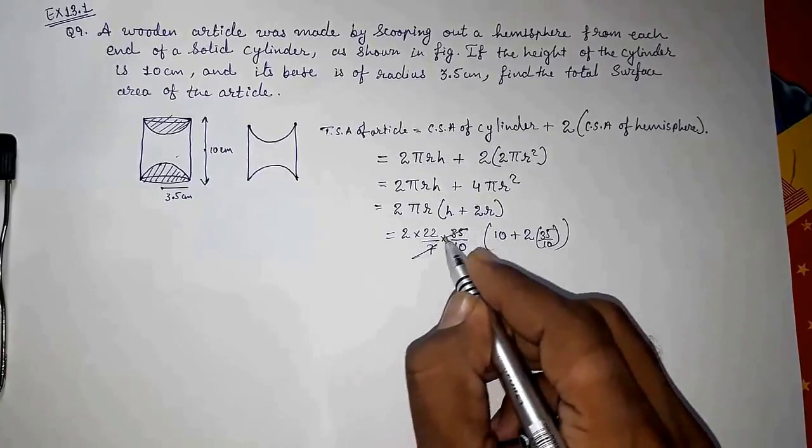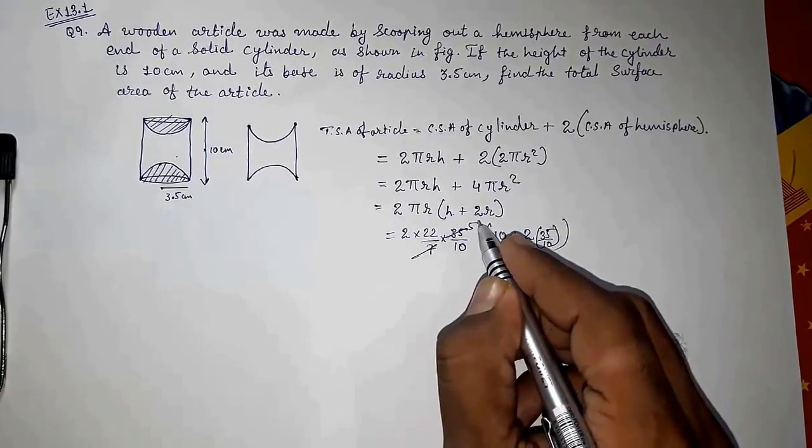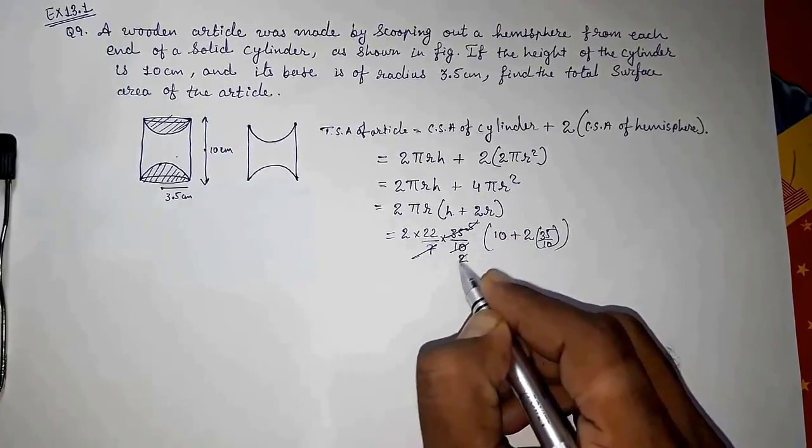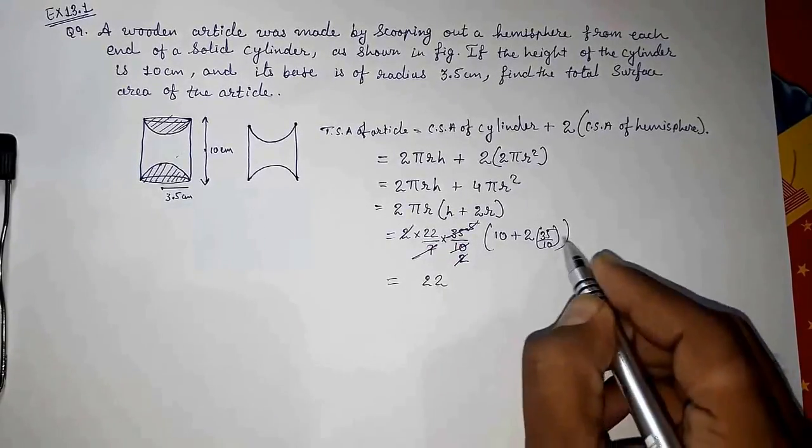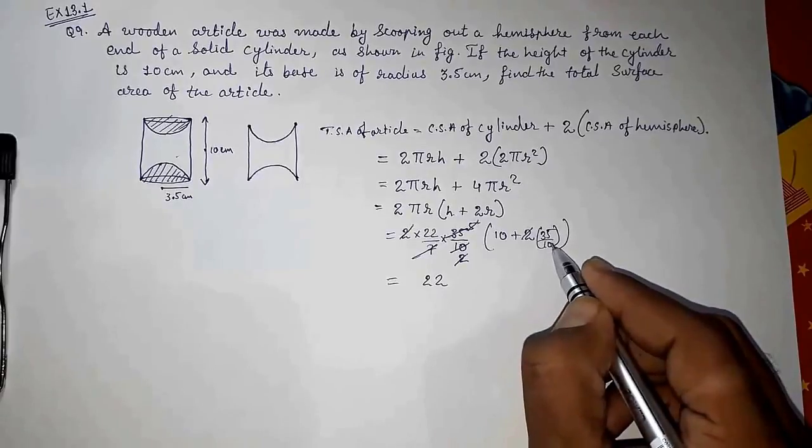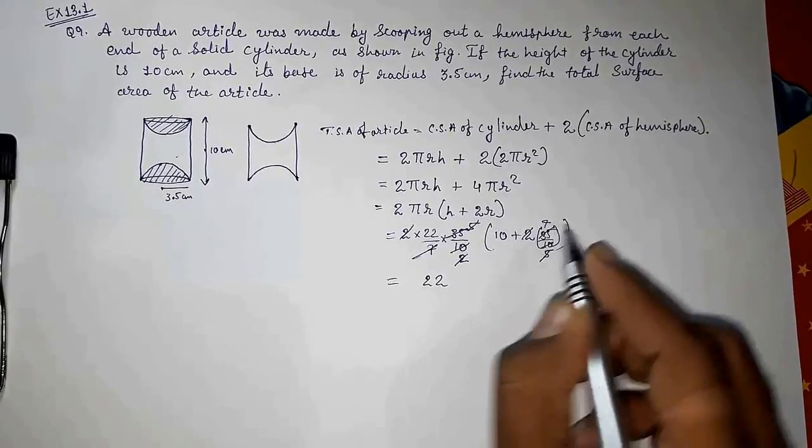Now we have to do cancellation. Seven ones are seven, fives are five, one, this two, this two. So here we are getting 22. Here also we can cancel: fives are five, and five seven.